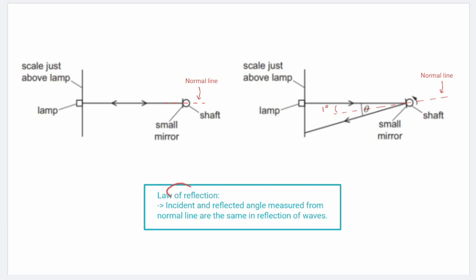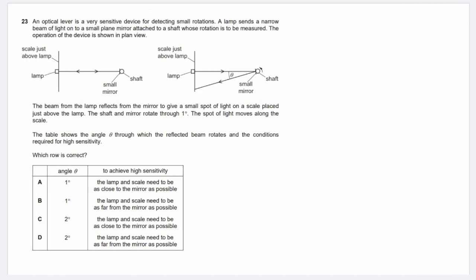And from the law of reflection, the reflected angle must be 1 degree as well, which means that this angle over here must be 1 degree also. Which is why from the diagram alone, we can directly see that the angle theta is actually 1 degree plus 1 degree, which will give us 2 degrees. So we can directly eliminate options A and B.